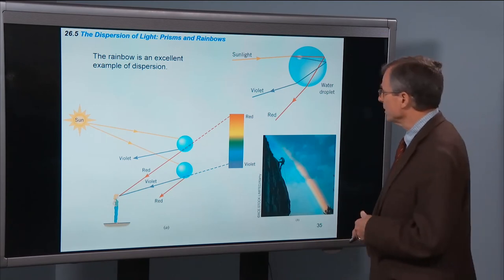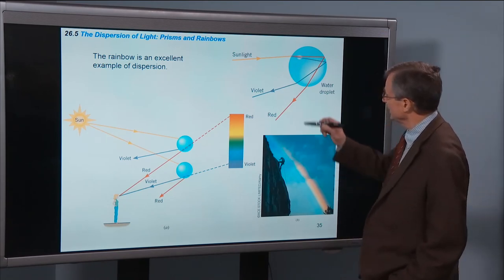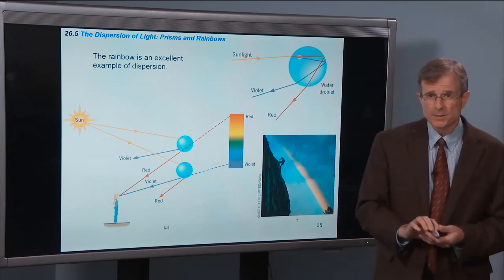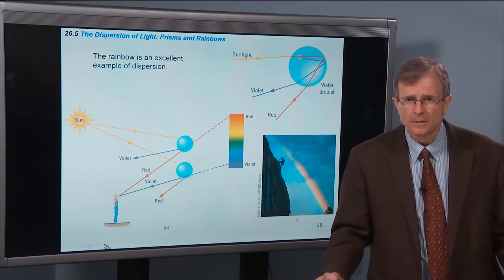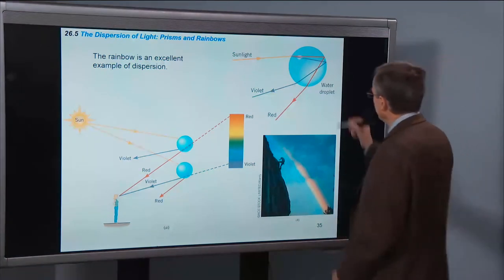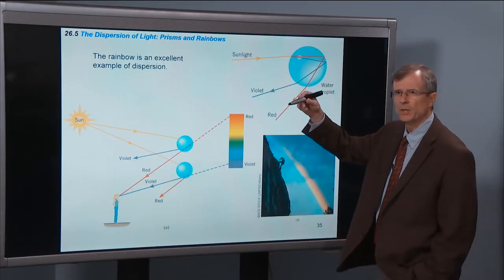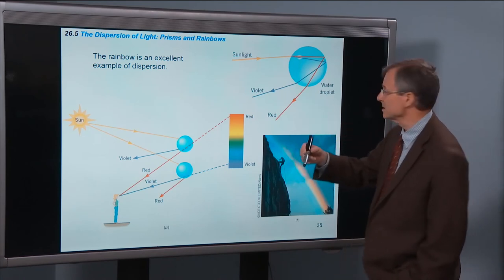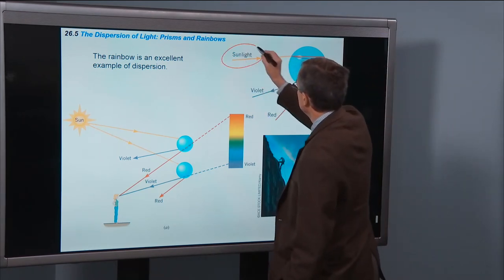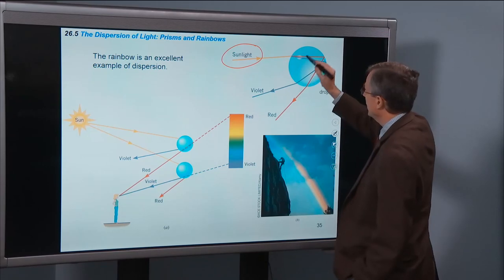One correction on the video. The sunlight comes into a raindrop, and I said that it reflects twice internally in the raindrop. It's actually only once. So this sunlight comes in, hits the raindrop.